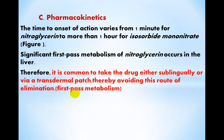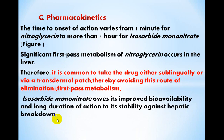Regarding pharmacokinetics, time of onset varies from one minute for nitroglycerin to more than one hour for isosorbide mononitrate. Significant first-pass metabolism of nitroglycerin occurs in the liver. Therefore, it is common to take the drug either sublingually or via a transdermal patch, thereby avoiding this route of elimination. Isosorbide mononitrate has improved bioavailability and long duration of action due to its stability against hepatic breakdown.